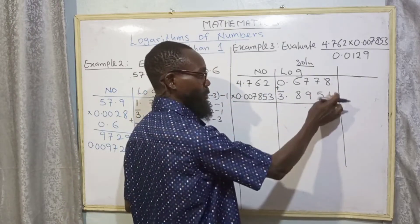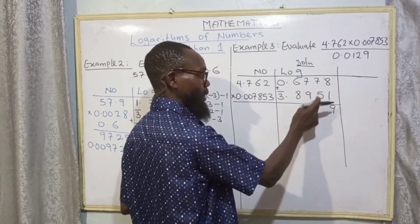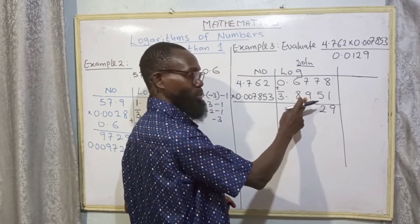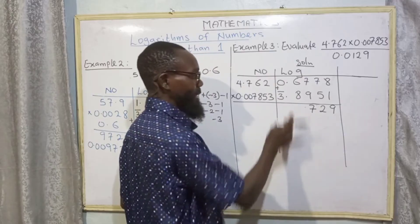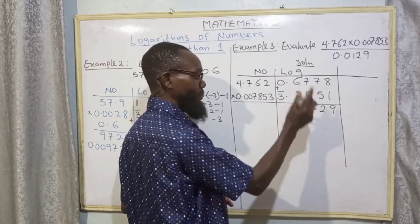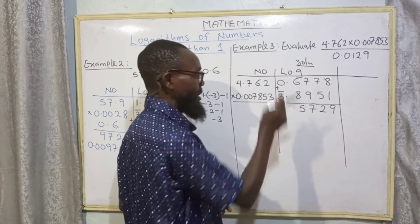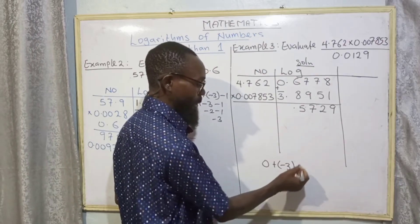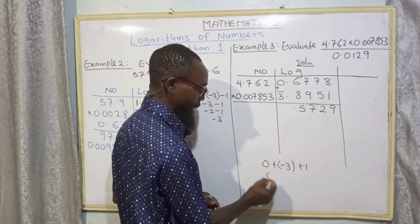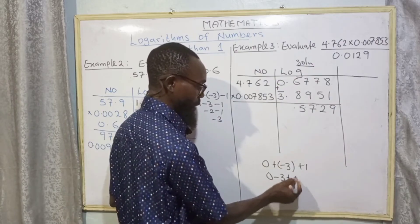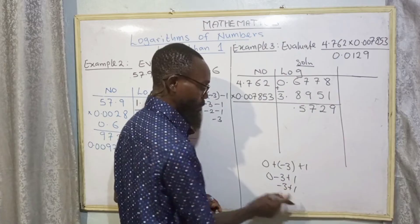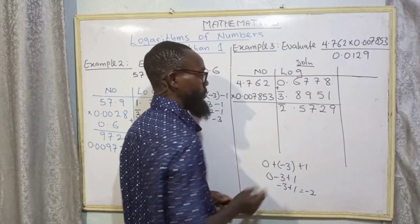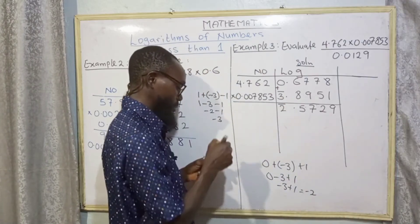This multiplication changes to addition: 8 plus 1 is 9; 7 plus 5 is 12, two carry one; 7 plus 9 plus 1 carried is 17, seven carry one; 6 plus 8 plus 1 carried is 15, five carry one. For the integer: 0 plus bar three (minus three) plus the one carried gives 0 minus 3 plus 1 equals minus two, written as bar two. That is the numerator.